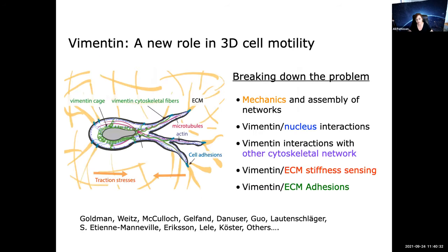Ultimately we want to understand how vimentin impacts cell movement in confined environments resembling real tissue, and how it protects the nucleus from damage. In these biological systems there are many parameters: the mechanics and assembly of the cytoskeleton networks themselves, the vimentin-nucleus interaction and how it's connected to the nucleus, interactions with other cytoskeletal elements, how it's involved in sensing environmental stiffness which regulates cell speed, and whether it connects with focal adhesions. Many groups are working on vimentin to answer these questions. I'm going to show you recent work particularly about ECM stiffness sensing.